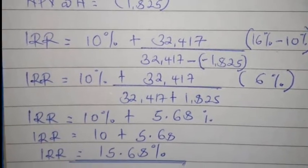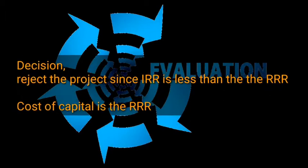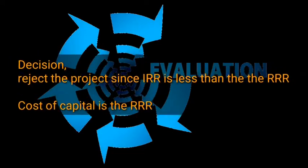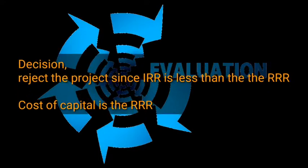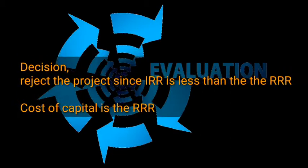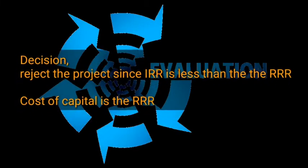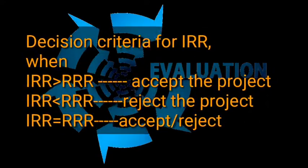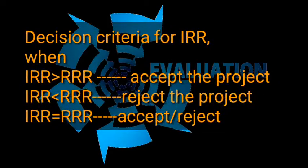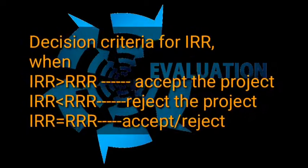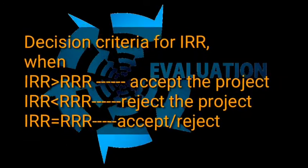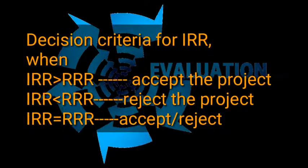Decision: we reject the project since the IRR of 15.68% is less than the required rate of return (RRR), which is the same as the cost of capital of 16%. The decision criteria for IRR: when IRR is greater than RRR, accept the project; when IRR is less than RRR, reject the project; when IRR equals RRR, you either accept or reject depending on the objectives of the firm.